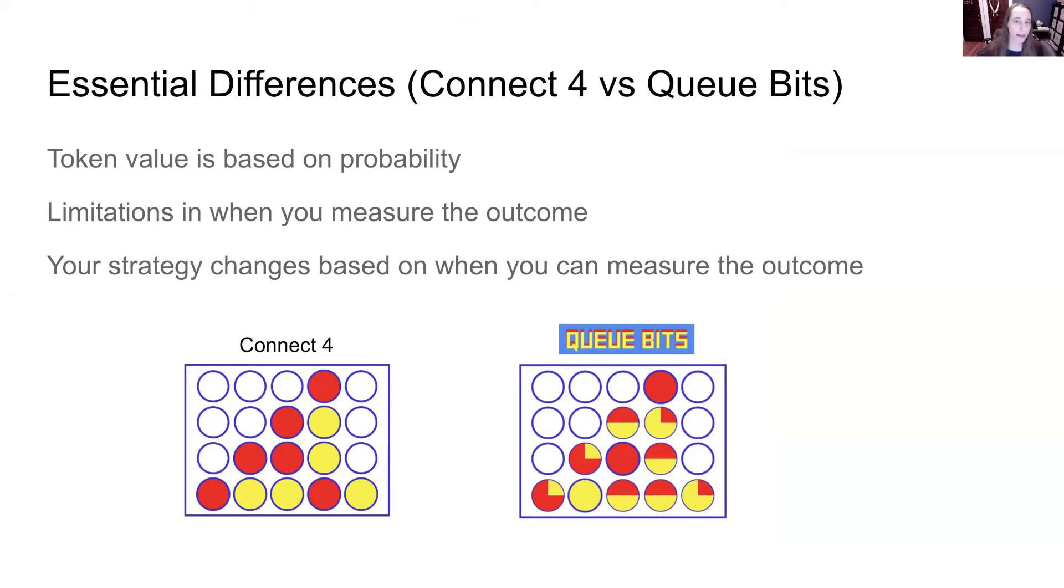And your strategy hopefully changed based on when you can measure the outcome. If you could measure the outcome immediately when it was placed, then everything you're seeing has already been measured, and so you know exactly what it's going to look like at the time you drop your token.